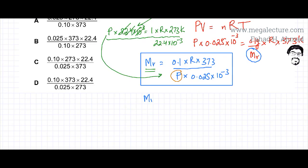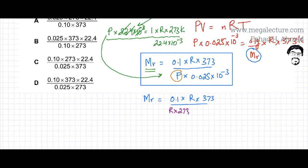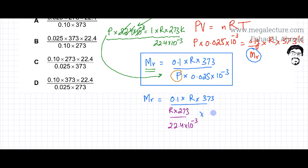Substituting into the Mr expression: Mr equals 0.1 times R times 373, divided by — placing the P expression — R times 273 divided by 22.4 times 10 to the power minus 3, all multiplied by 0.025 times 10 to the power minus 3. We can now start cancelling: the 10 to the power minus 3 terms cancel, and R cancels out.